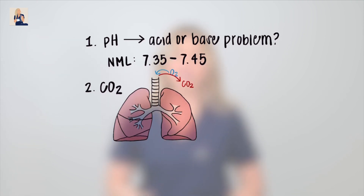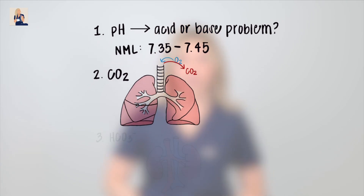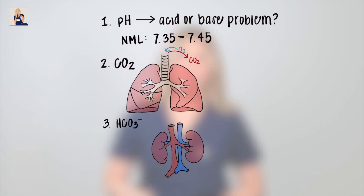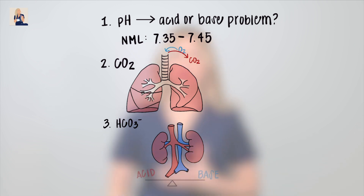And lastly, our third key player is bicarbonate, HCO3 or bicarb for short. Bicarb is a byproduct of your body's metabolism — how well your kidneys are working to balance acid and base in the body.